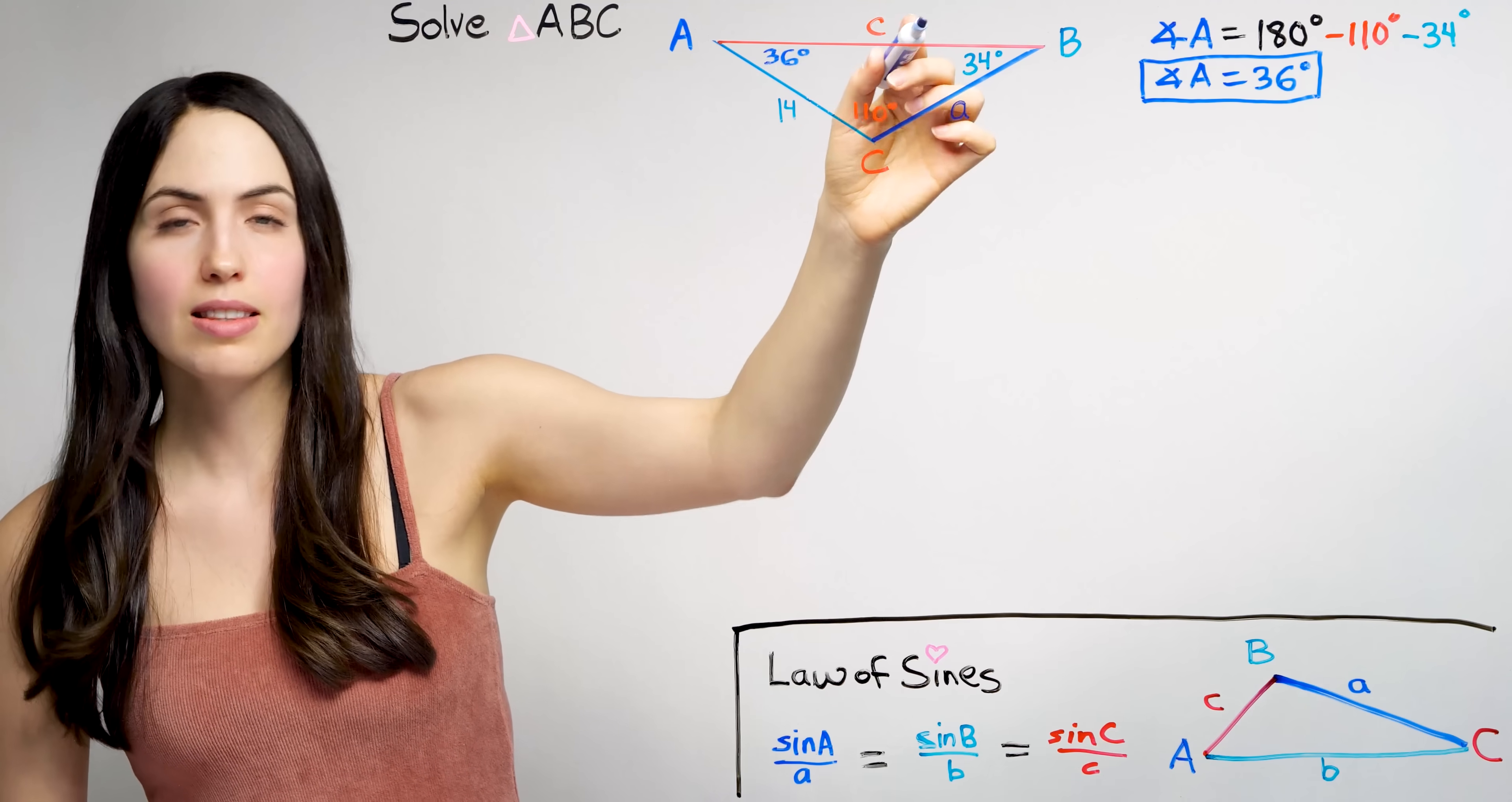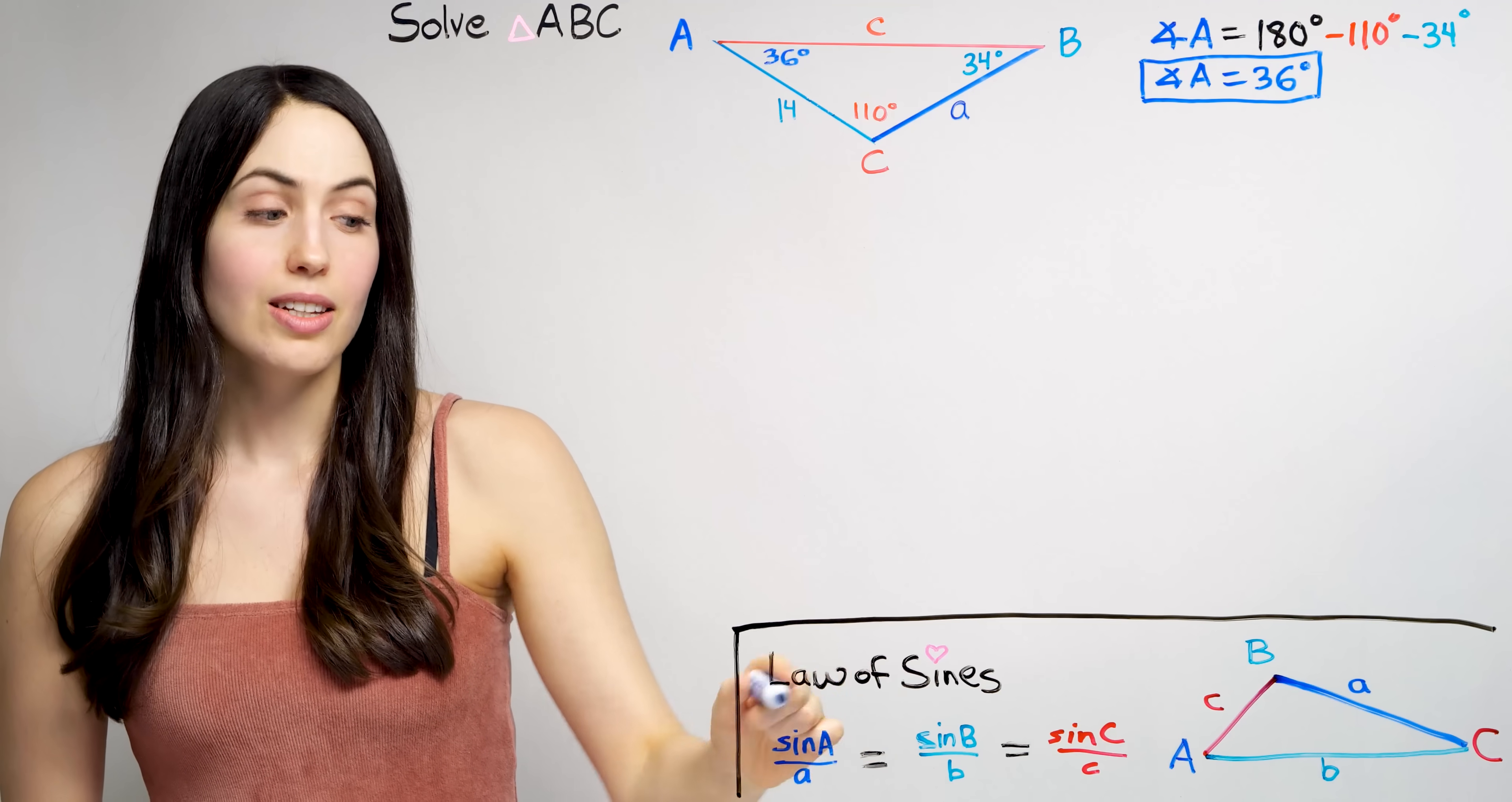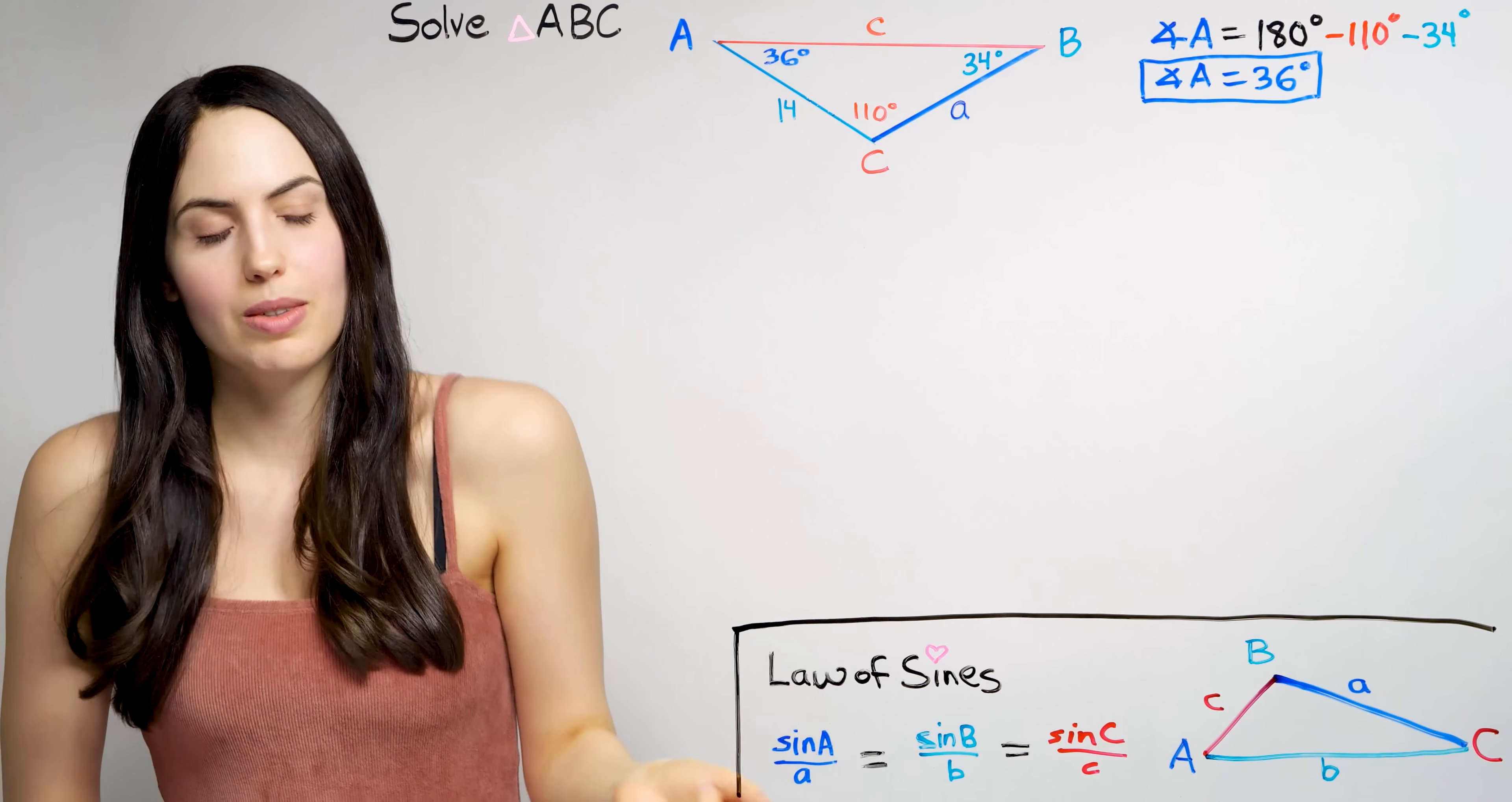But to find these missing lengths, we do need the law of sines. So first, let's just write out all these ratios. The sine of each angle over the length opposite. And it doesn't matter which one you start with.